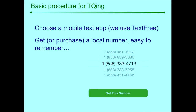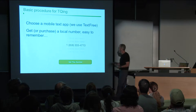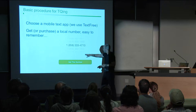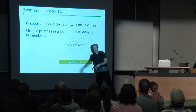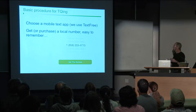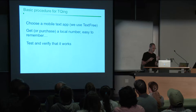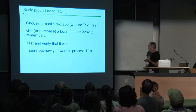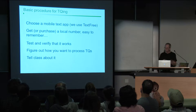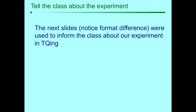The basic procedure for TQing: choose a mobile text app — we're now using Text Free. Get or purchase a local number, an easy-to-remember one. When you ask for a number, it gives you a scrolling list and you choose the easiest to remember. I like patterns — four and seven is three apart, and there's a three there. Test and verify that it works — you don't want to drag this into class and have it fail. Figure out how you want to process text questions, then tell the class about it, and dive in.